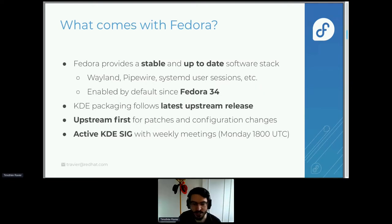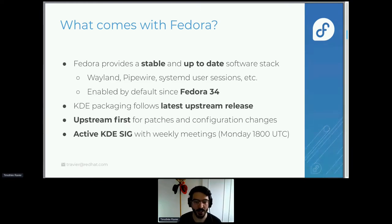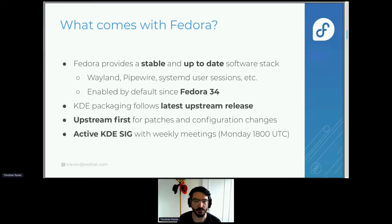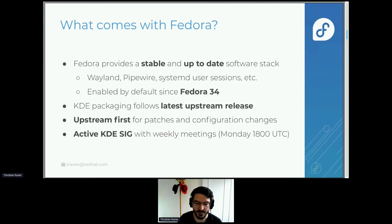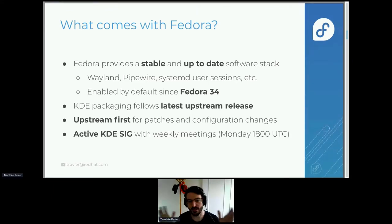What comes with Fedora Kinoite? This section is about what's in Fedora right now that we take advantage of. We all know that Fedora gives us a stable and updated software stack. In Fedora we've enabled Wayland by default, PipeWire by default, and systemd user sessions for KDE — so all of that comes in, and it's been available for one release right now in Fedora 35.